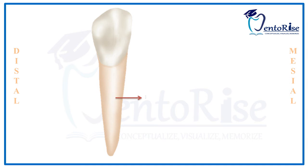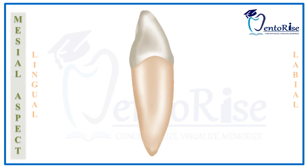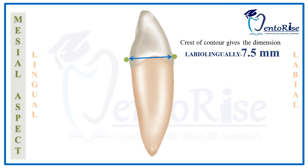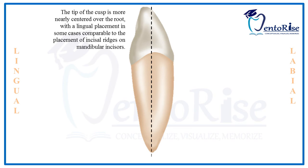From the lingual aspect, the lingual portion of the root of a permanent mandibular canine is relatively narrower than that of the maxillary canine. From the mesial aspect, the labiolingual dimension as measured from the crest of contour in the cervical third of the crown is 7.5 mm, while from the cervix it is 7 mm. The cusp tip is more nearly centred over the root; however, in some cases a lingual placement of the cusp tip can be seen, comparable to the placement of incisal ridges on mandibular incisors.